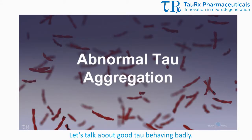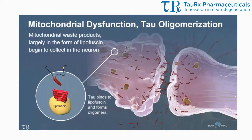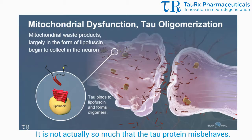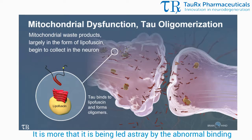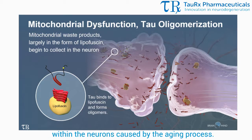Let's talk about good tau behaving badly. It is not actually so much that the tau protein misbehaves, it is more that it is being led astray by the abnormal binding within the neurons caused by the ageing process.